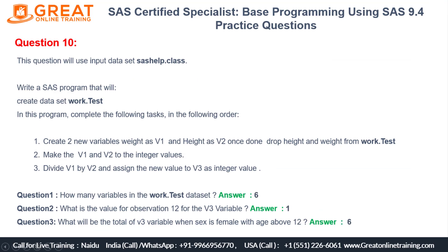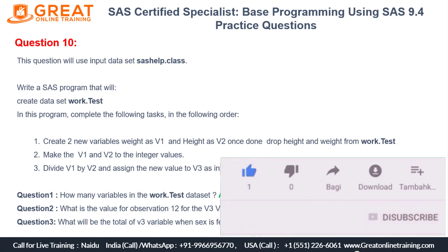Let me show all three answers together. How many variables in the dataset? Six. For observation number 12, the value of v3 is one. For females with age above 12, the total sum of v3 is six. Those are the three correct answers. Try it yourself and see if you get the same — if you get a different result, open a discussion in the comments. Check the description for the full program. Please subscribe, click the bell icon for more updates, and thank you for watching — see you in the next video.